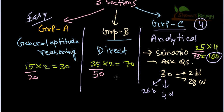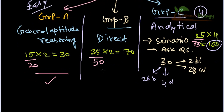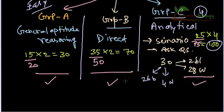You need to tackle one group at a time. If you don't clear NET in one go that is fine — it is a top exam. A three-attempt approach works well: first attempt, focus only on Group A and clear it; second attempt, add Group B preparation; third attempt, prepare Group C and you will likely crack it.